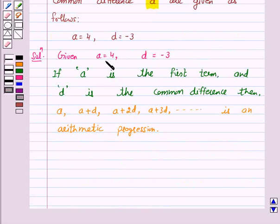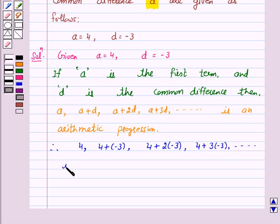Now, given A is equal to 4 and D is equal to minus 3, therefore 4, A plus D that is 4 plus minus 3, 4 plus 2 into minus 3, 4 plus 3 into minus 3 and so on is an arithmetic progression.